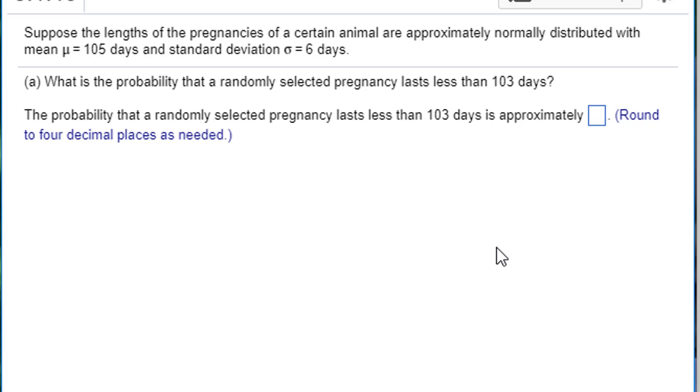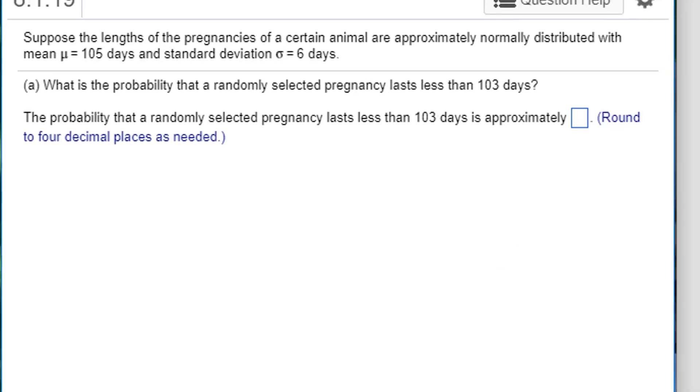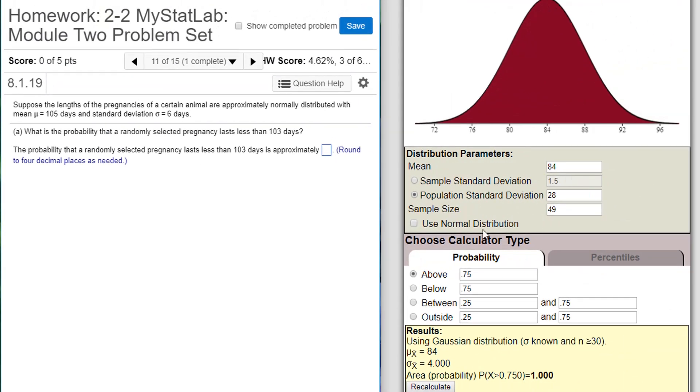So we're trying to find probabilities now. Let's put these parameters in. The mean pregnancy length is 105 days and I'm told the population standard deviation is six days. Now I'm asked what's the probability that a single randomly... oh, I'm actually told that the population is approximately normal.